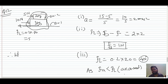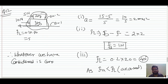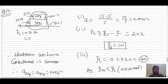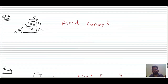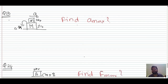Since the calculated frictional force is less than the limiting value, what we assumed is correct — the blocks move together. Therefore acceleration of the 2 kg block equals acceleration of the 3 kg block, which equals 2 m/s².